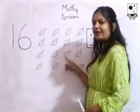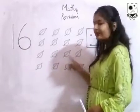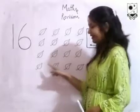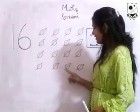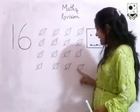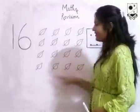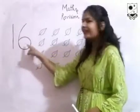11, 12, 13, 14, 15, 16. How many leaves are there? 16 leaves are there.